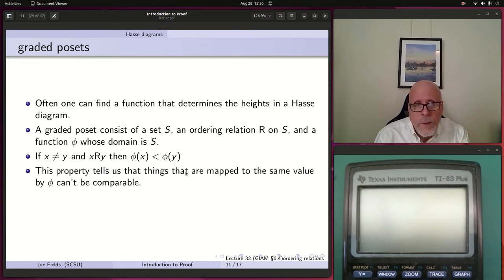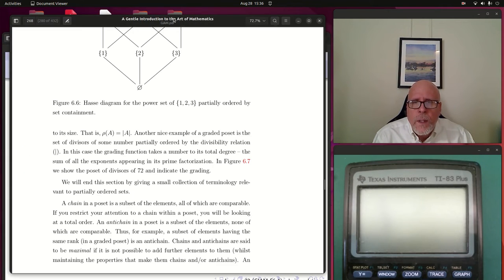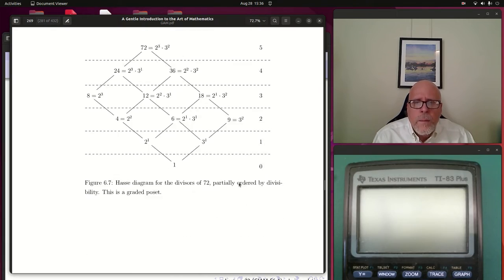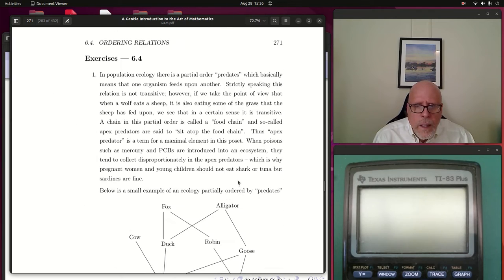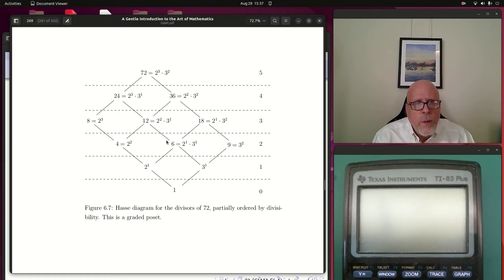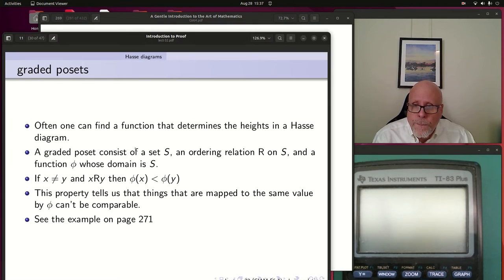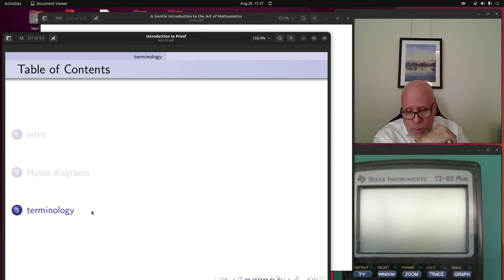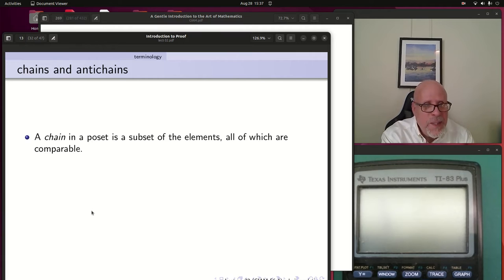If X and Y are distinct, and X is related to Y, then the function evaluated on those two things has to go in the appropriate order. That phi of X is less than phi of Y if X R Y. This tells us that things that are mapped to the same value can't be comparable, but there may be other things that are also not comparable as we saw in the divisors of 72. There's an example on page 271, but I think they're talking about that one, 269.